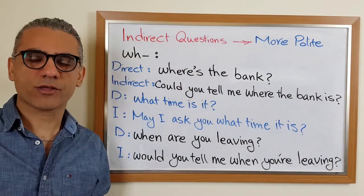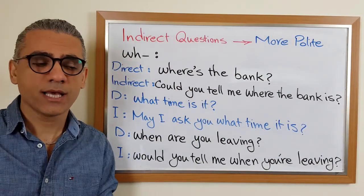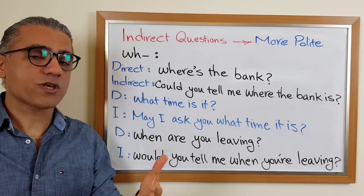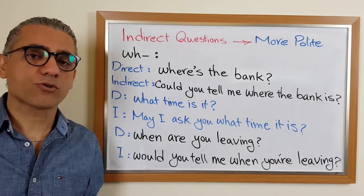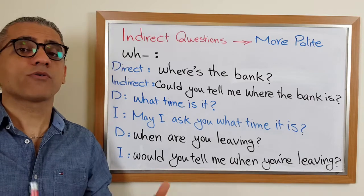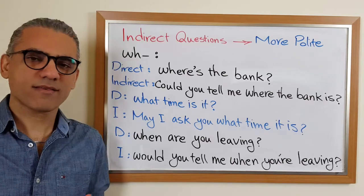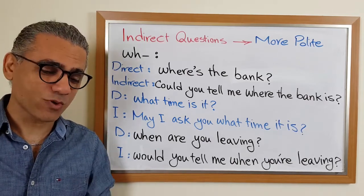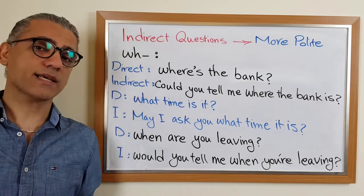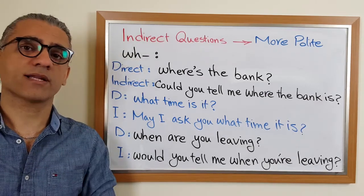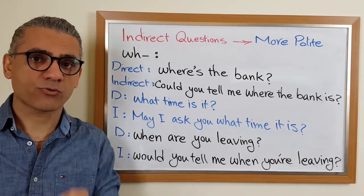We use indirect questions to sound more polite. For example, when you see someone in the street and you want to ask directions, you don't say 'Where is the bank?' — this sounds a bit impolite. So we want to sound more polite. That is the main reason we use indirect questions.